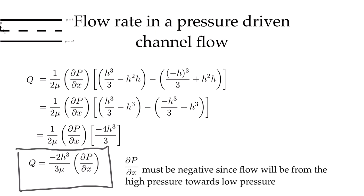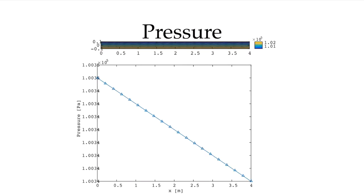The CFD solution of the full Navier-Stokes equations confirms that these simplifications giving us the analytical solution are correct. Looking at the pressure: in the x direction from inlet to outlet the pressure drops linearly — dp/dx is a constant and the pressure distribution is a straight line. In the two-dimensional plot we also see the hydrostatic variation in y, with the weight of the fluid being balanced by the pressure forces.